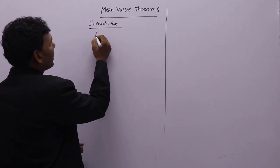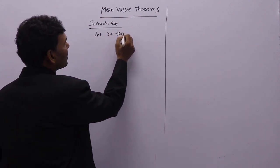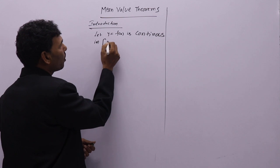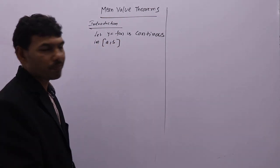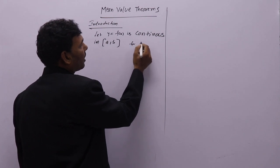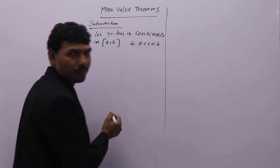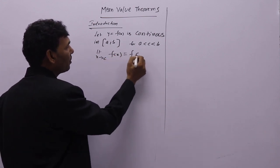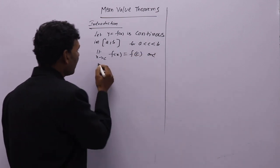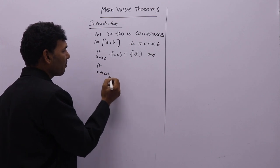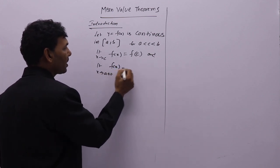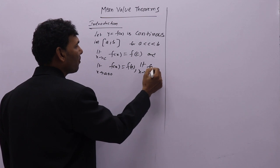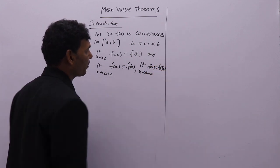Let y = f(x) be continuous in closed interval [a, b]. This means: for a < c < b, limit as x tends to c of f(x) = f(c); and limit as x tends to a⁺ of f(x) = f(a); and limit as x tends to b⁻ of f(x) = f(b).